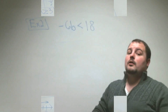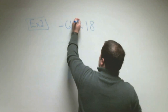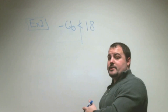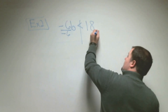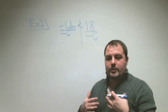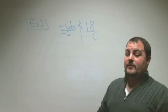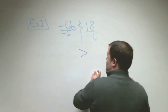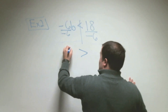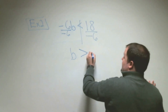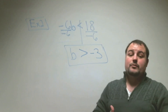In example two, we have negative 6b is less than 18. Our job is to get the variable b all by itself. We draw a line through the inequality sign and divide both sides by negative 6. Since we're dividing by a negative, the inequality sign has to change direction. Negative 6 divided by negative 6 is 1, so we have b, and 18 divided by negative 6 is negative 3.